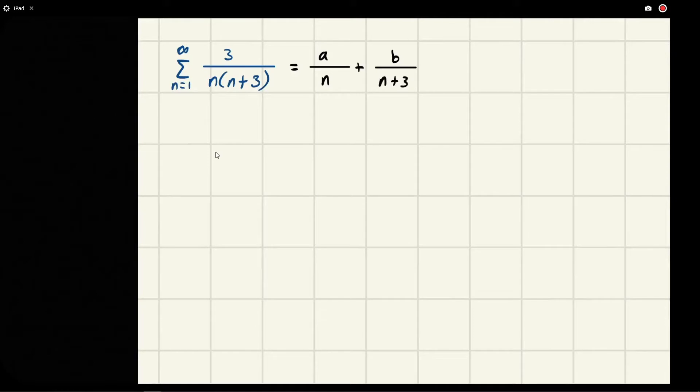So I had a professor call this the cover-up method, and what it entails is first we look at what would make this thing zero, and we see that zero would make it zero, and then we cover up that term and evaluate it at that spot.